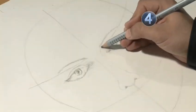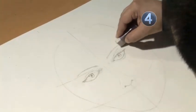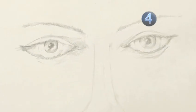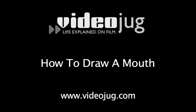You can now do some shading to suggest the contours around the eyes, and erase all the guidelines to finish off your drawing of eyes. Why not go on to watch Videojug's How to Draw a Nose, and How to Draw a Mouth. Done.